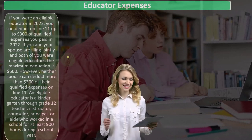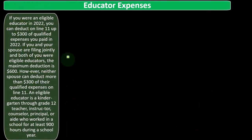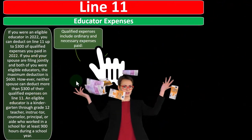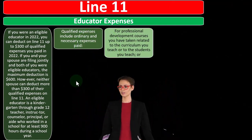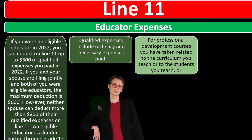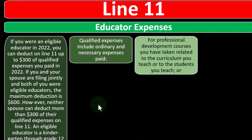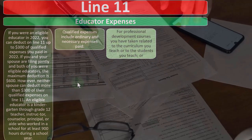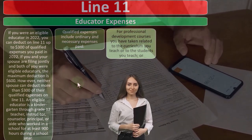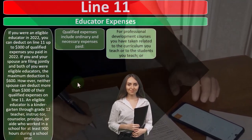An eligible educator is a kindergarten through grade 12 teacher, instructor, counselor, principal, or aide who worked in a school for at least 900 hours during a school year. Qualified expenses include ordinary and necessary expenses paid — that's kind of the general rule you would normally expect on a Schedule C type business. If I had to expend something in order to generate the revenue, I should be able to deduct that so that you tax me on the net income as opposed to the gross income. However, if you're a W-2 employee, most people don't get any of those deductions because it's assumed that as an employee, your employer is taking care of that situation.